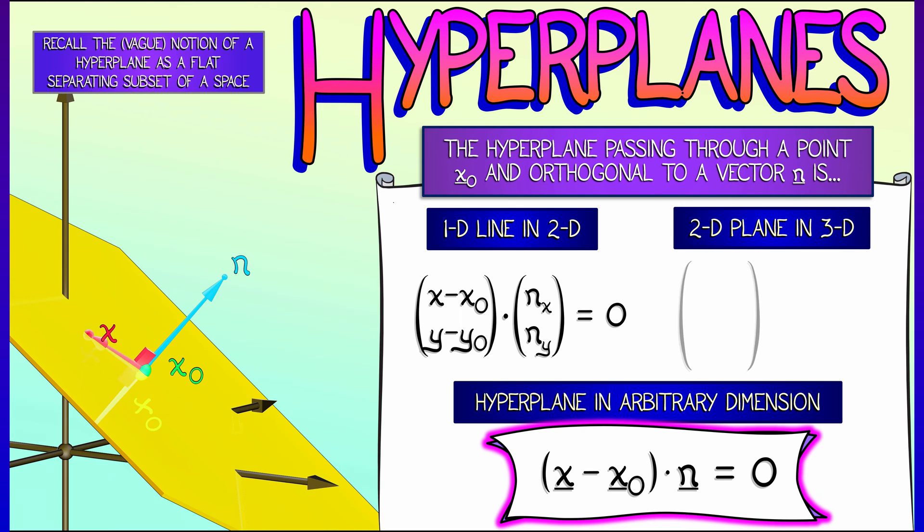And in fact, the equation that we gave for a 2D plane in 3D passing through a point in terms of these things we call three slopes and x and y and z, this is really just taking the dot product with a vector n and setting it to zero.